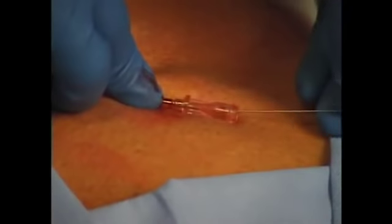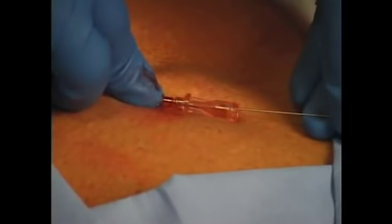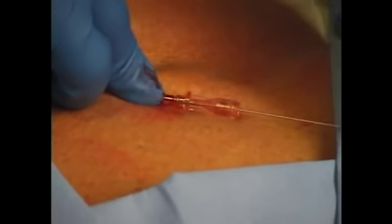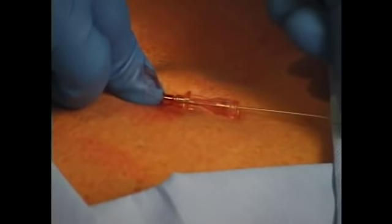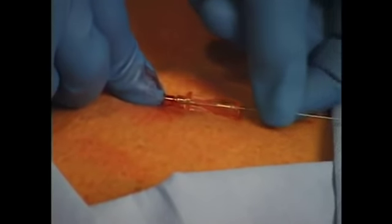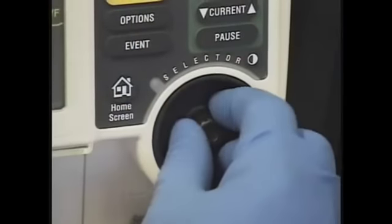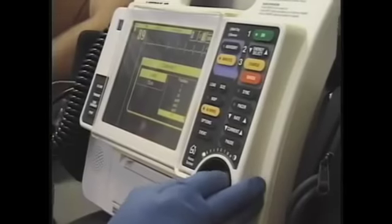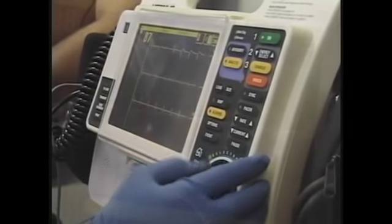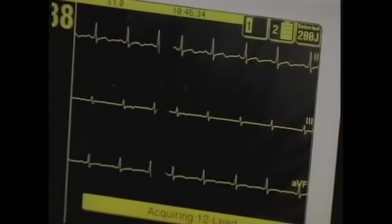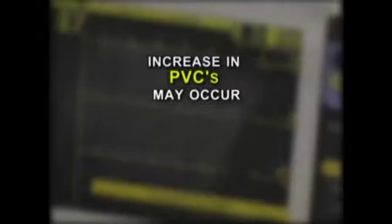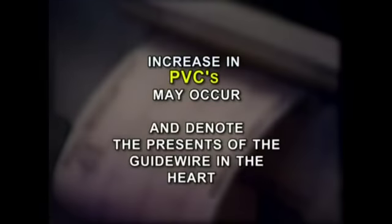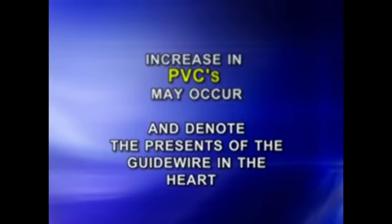After successful cannulation of the vein, the guide wire is then advanced through the needle into the vein. At this point, cardiac monitoring with an audible EKG tone is essential to note the development of any arrhythmia. An increase in PVCs may occur and denote the presence of the guide wire in the heart.